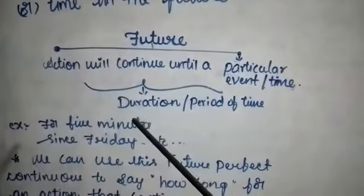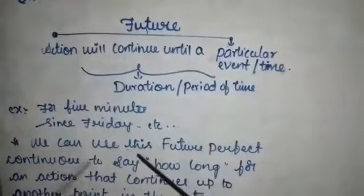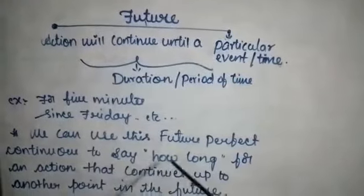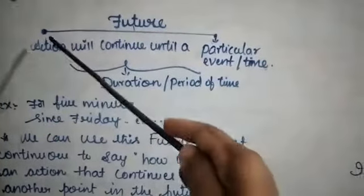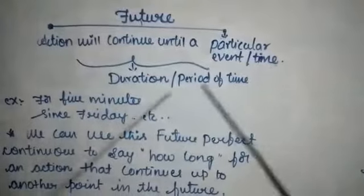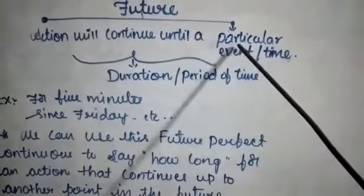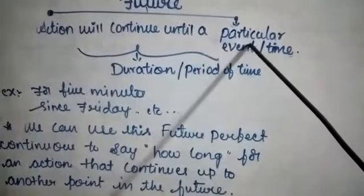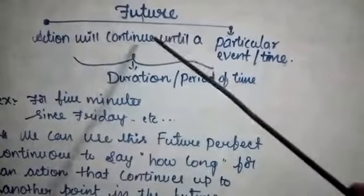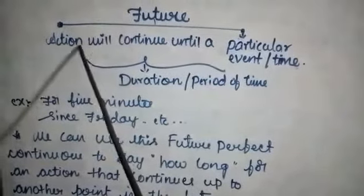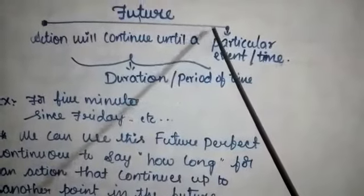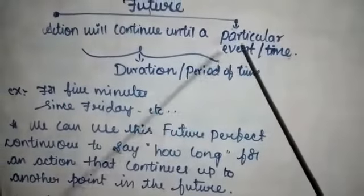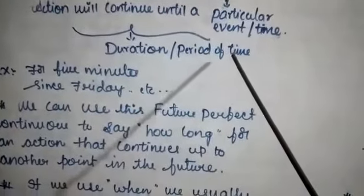In another way, we can say future perfect continuous tense is used to express how long an action continues up to a particular point of time or event in the future. It tells about how long the duration of that continuing action is.